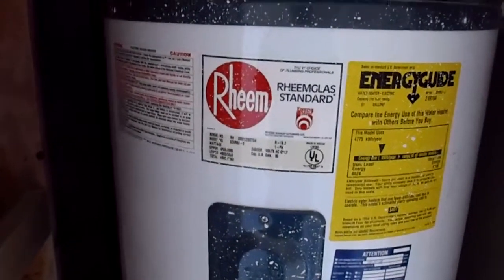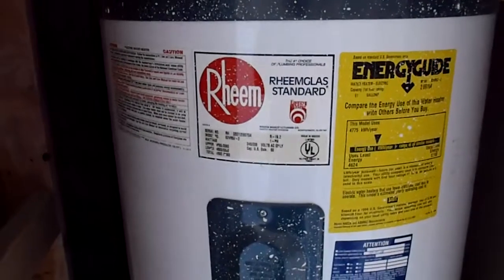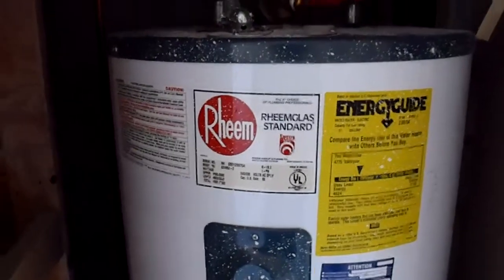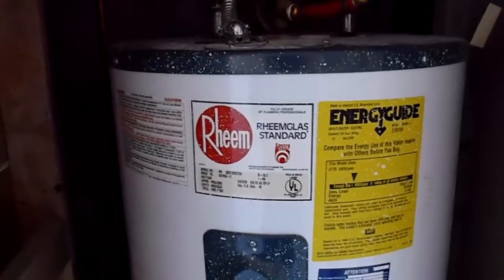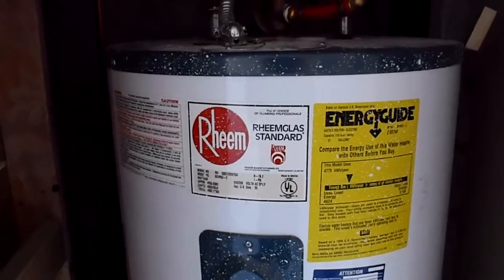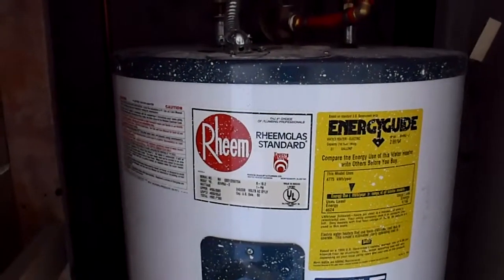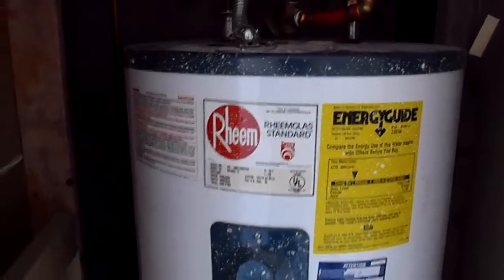We're just looking at brand Rheem. It was put in in 01, 50 gallons, kind of normal electric in size, which might be a little bit small with it being electric for the average family. Typically, 80 gallons would be a much better rate with electric because the recovery is not so quick.